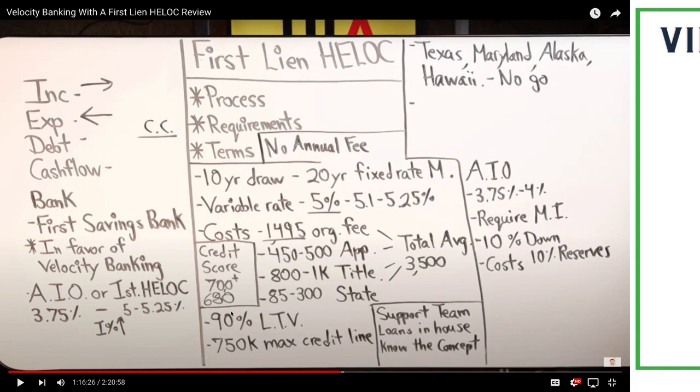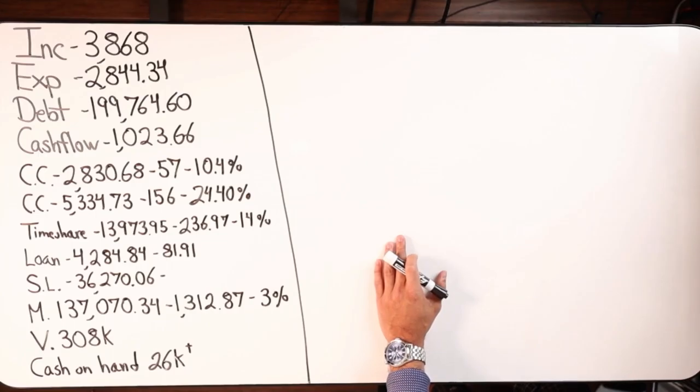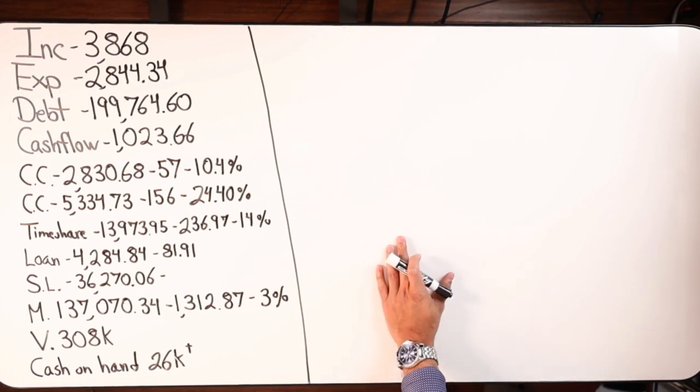First Savings Bank services everywhere except Texas, Maryland, Alaska, and Hawaii. I broke down the HELOC costs, fees, requirements. It's a great resource to fully understand first lien HELOCs. That video is not public on YouTube yet. I'm trying to interview their entire team and drop a series. That's one of many different HELOCs in the marketplace. It's all about doing the homework.